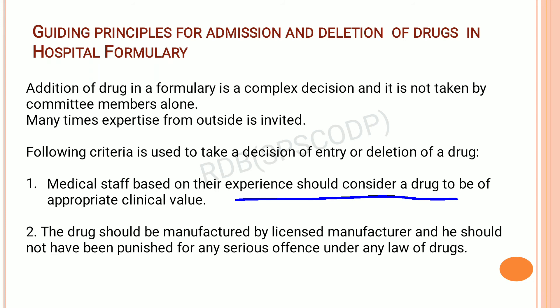The drug should be manufactured by a licensed manufacturer who should not have been punished for any serious offense under any drug law. The manufacturer must have a valid drug manufacturing license, and they must not have any offense or penalty recorded under the Drugs and Cosmetics Act. Only then can we order a drug from that manufacturer and enter it into the hospital formulary.